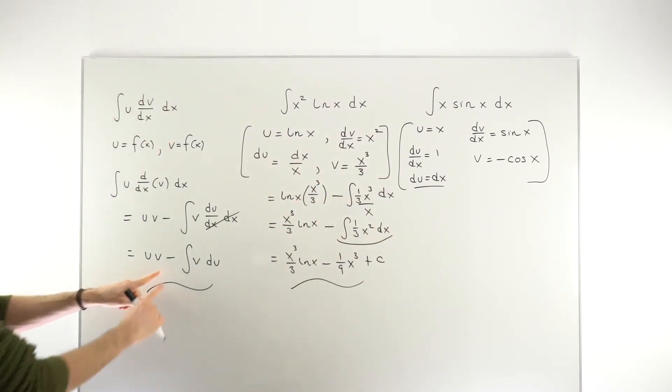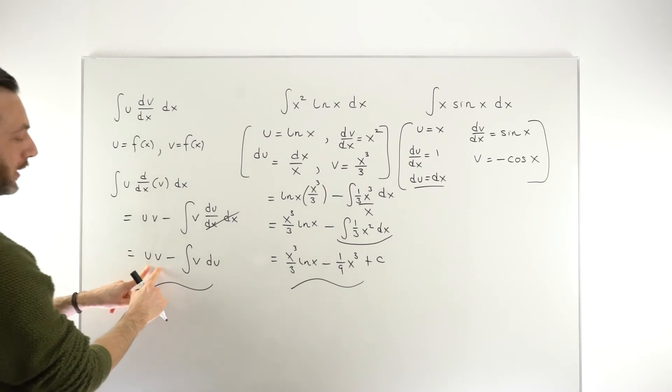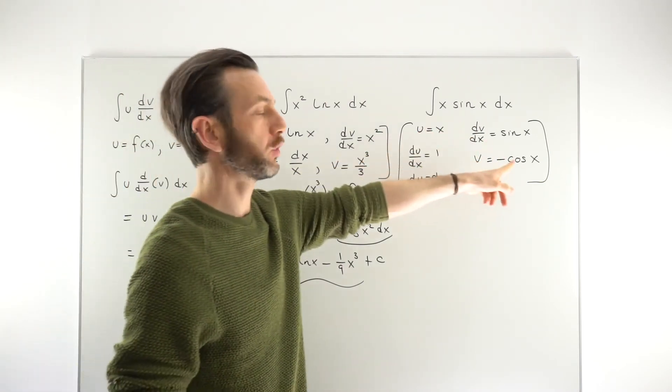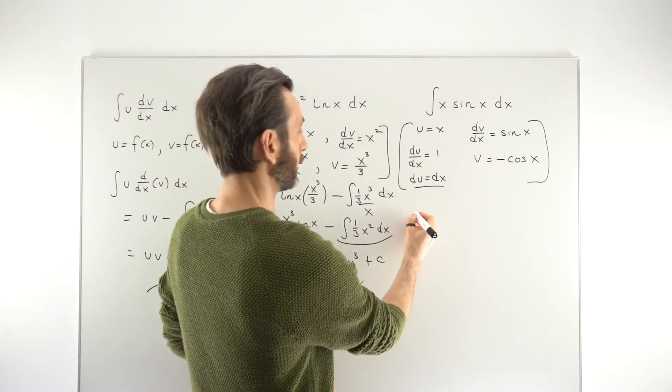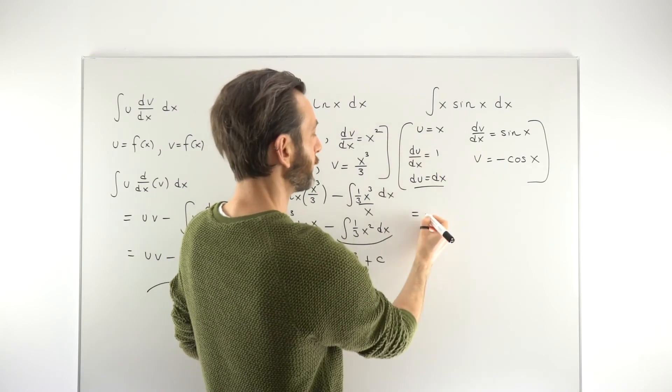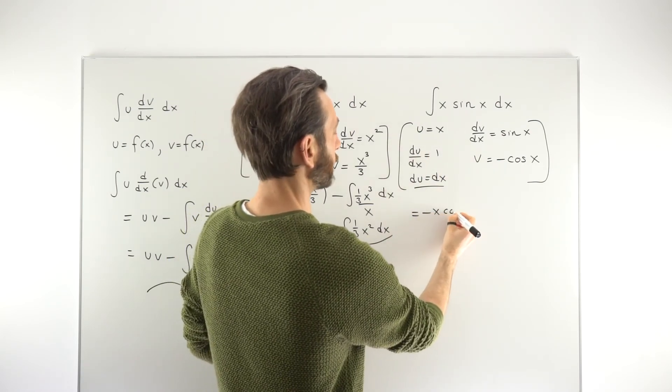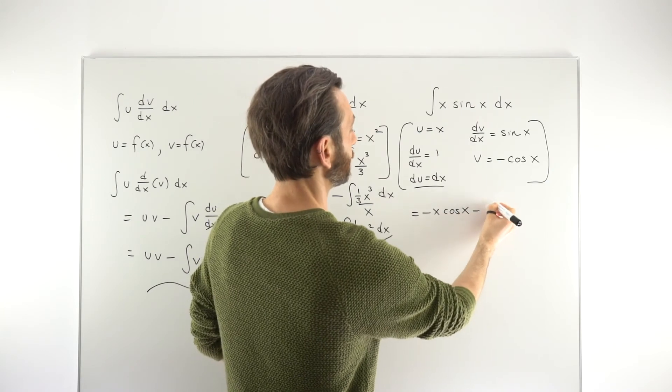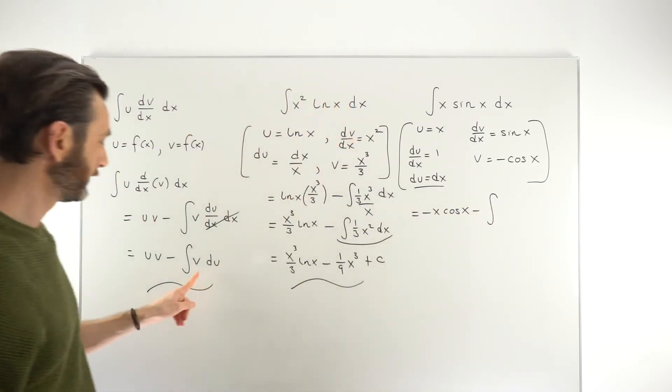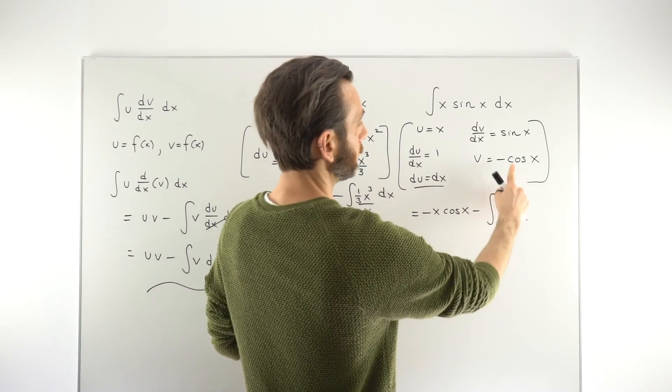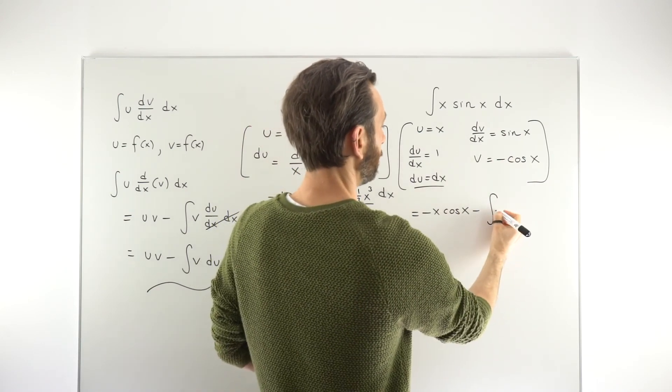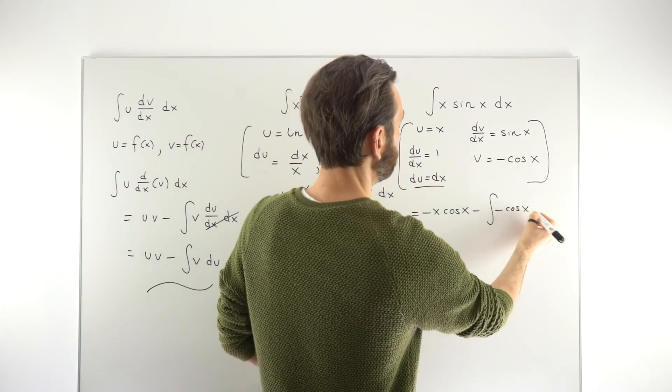So going back to the formula, we need to start by doing uv. So we've got a u and we've got a v. So that's good. So that's going to give us uv, which is going to be minus x cos x. Subtracting from that the integral of v du. So v is this guy here minus cosine x.